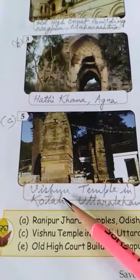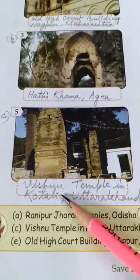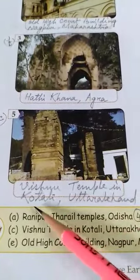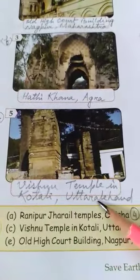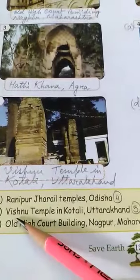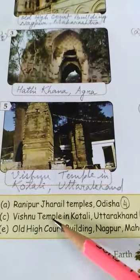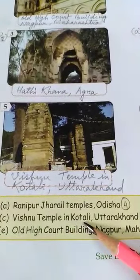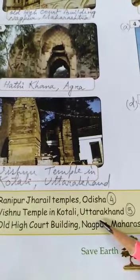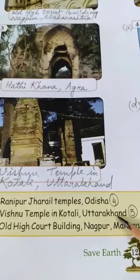Next is question number 5. The answer will be Vishnu Temple in Kotali, Uttarakhand — spelled V-I-S-H-N-U Temple in K-O-T-A-L-I, Uttarakhand: U-T-T-A-R-A-K-H-A-N-D.